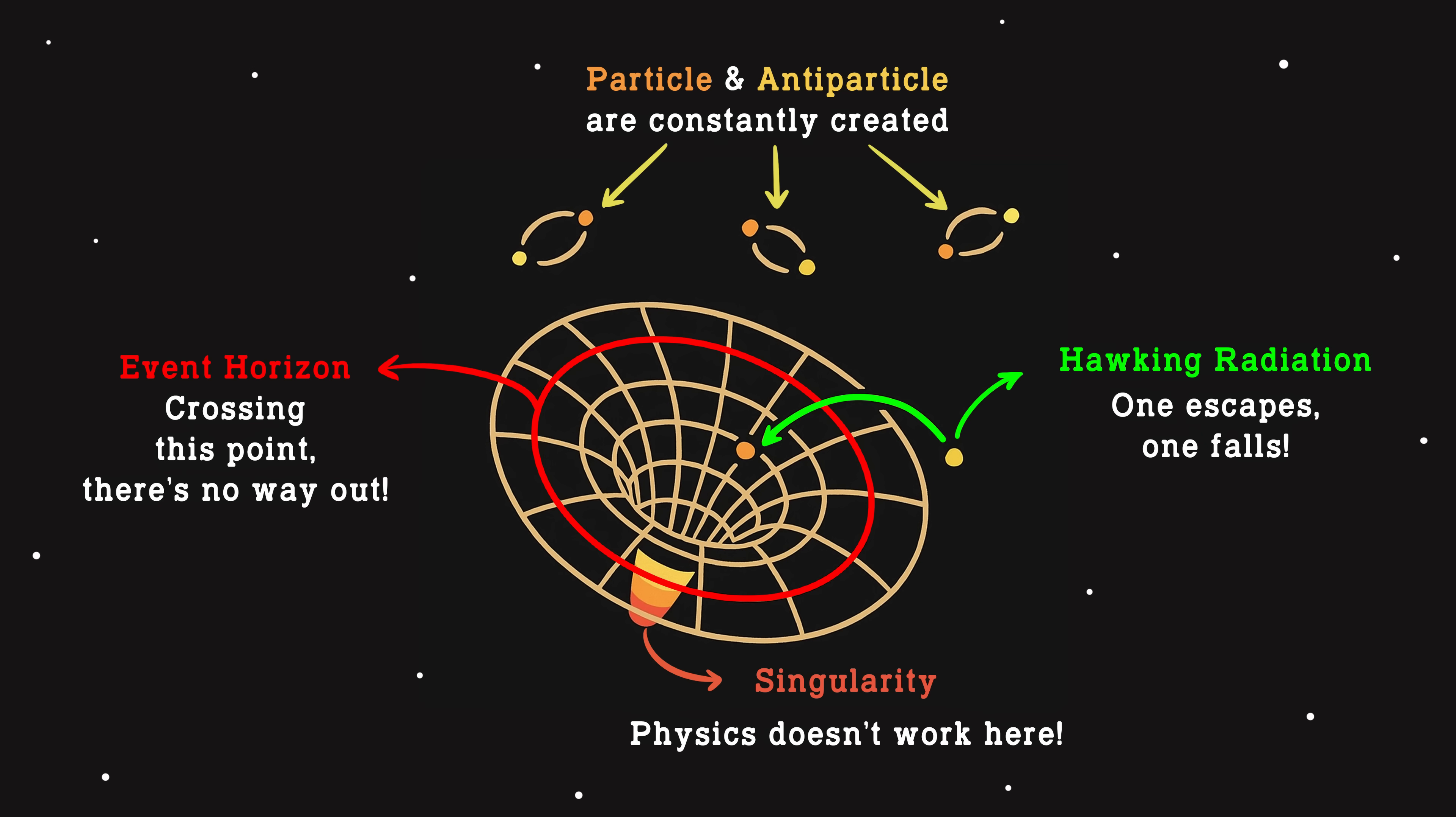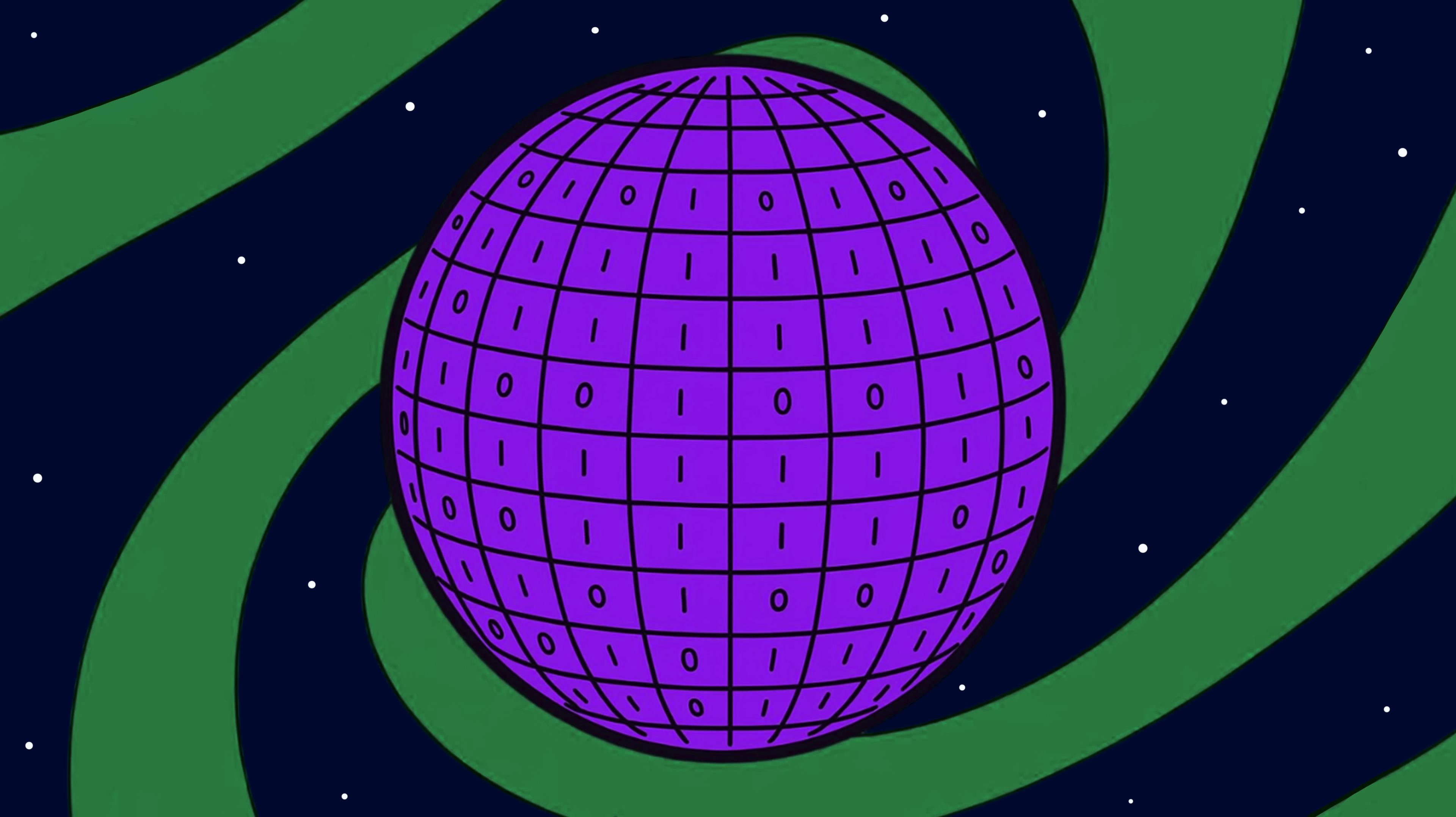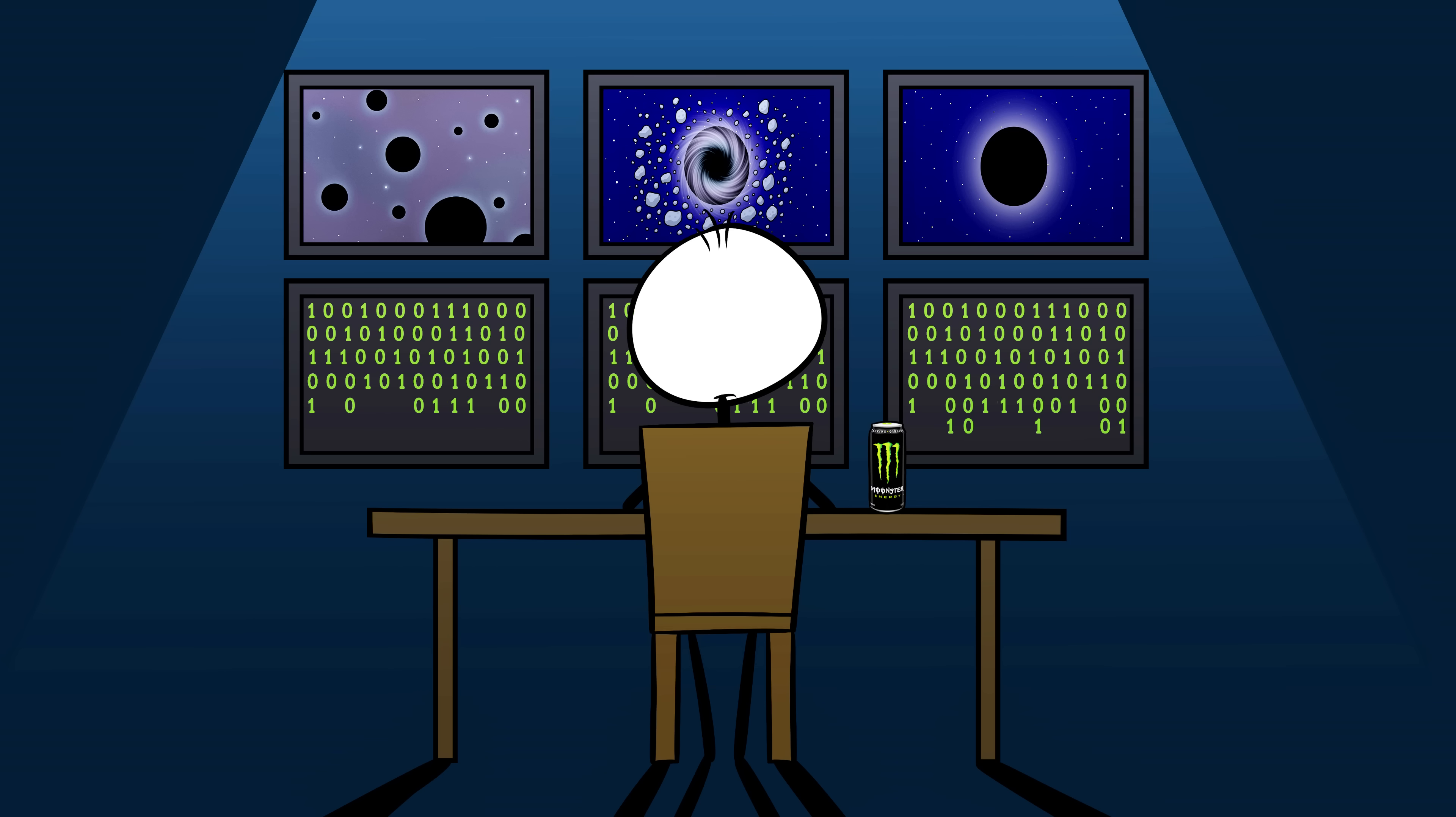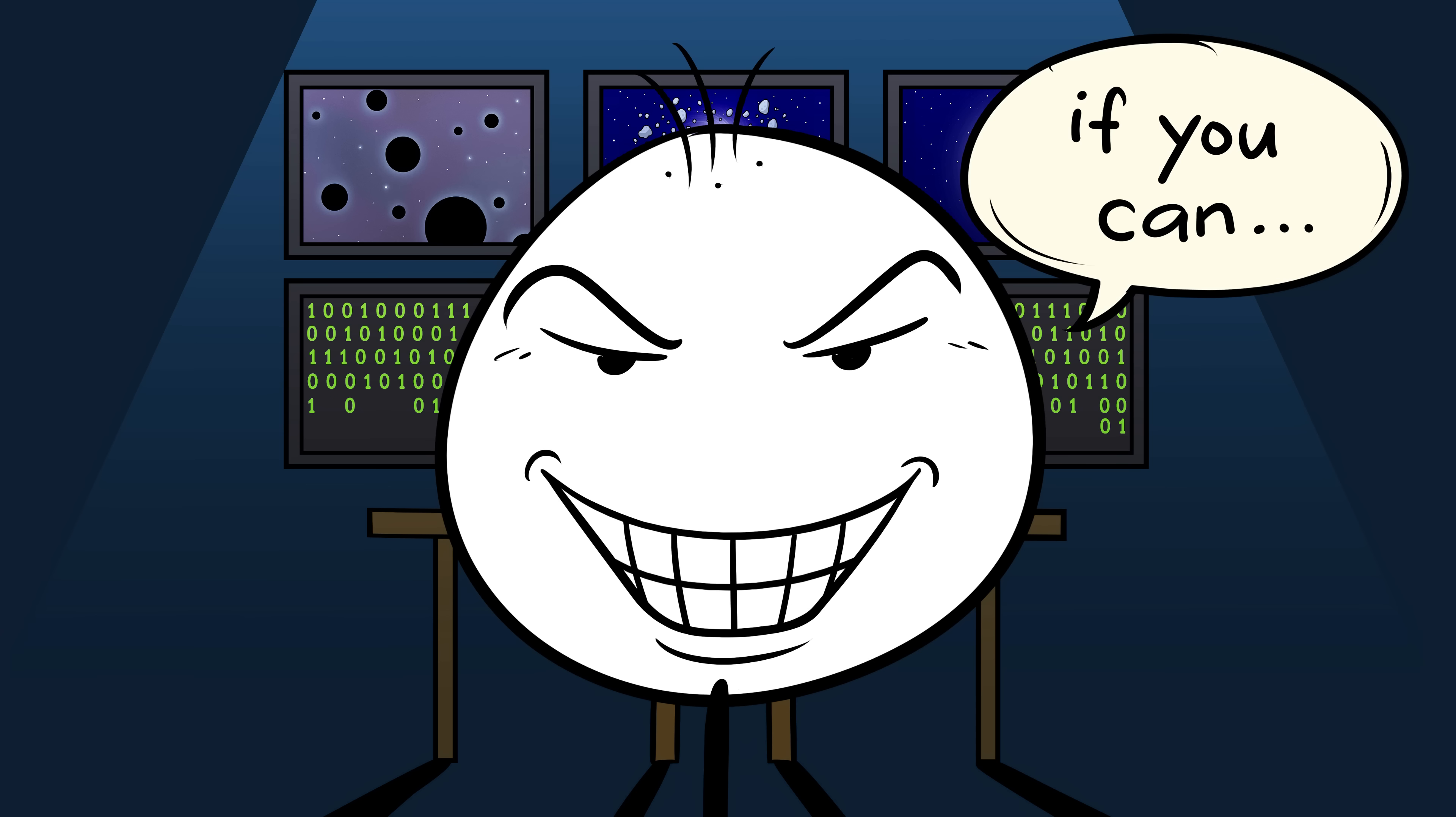Some theories suggest that information gets scrambled and somehow escapes with the radiation. Others say it's stored in a holographic layer on the event horizon, like cosmic data written on the black hole's surface. And then there's the truly weird possibility that everything we see might already be a hologram projected from a two-dimensional cosmic boundary. If that's true, then black holes aren't destroying information at all. They're just moving it around in ways we don't yet understand. So yeah, the universe might be less like a machine and more like a very patient hacker, hiding its data until we finally learn how to read the code.